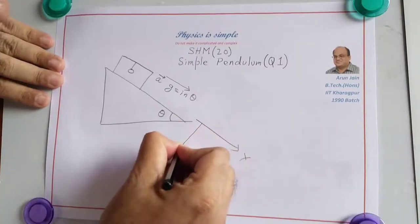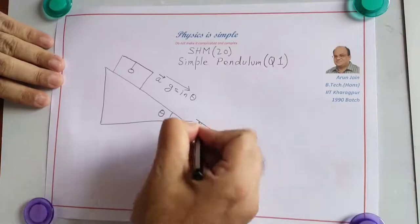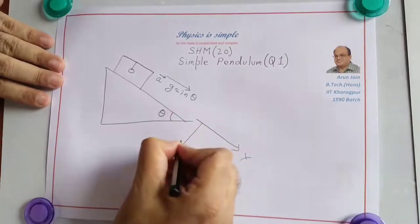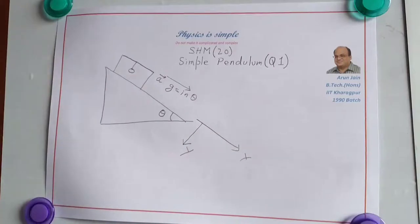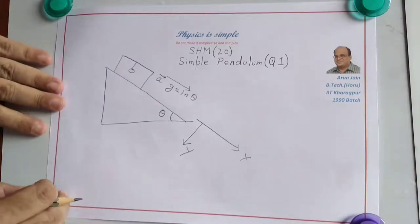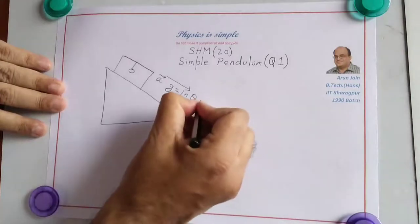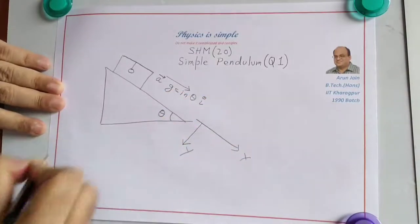Perpendicular to this, we can call it y-axis. If you want, we can call that y-axis. We can call this as well. You are interested in the direction. So therefore, this becomes G sine theta i-cap.